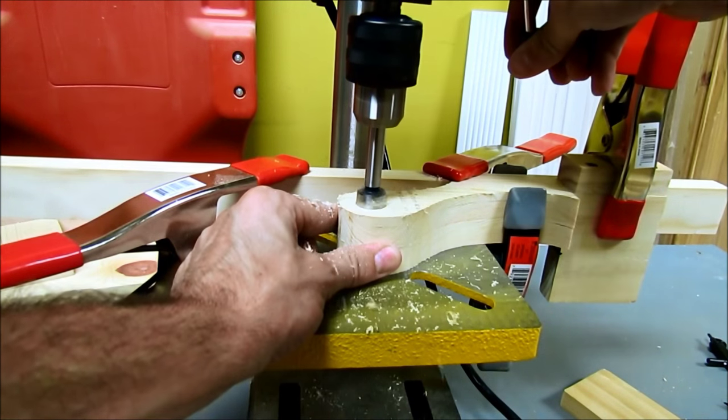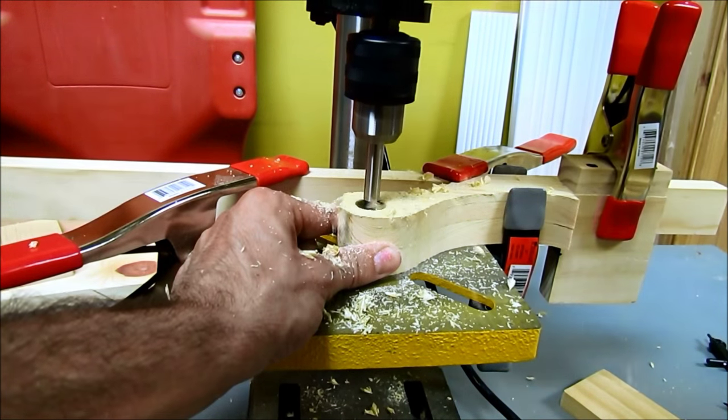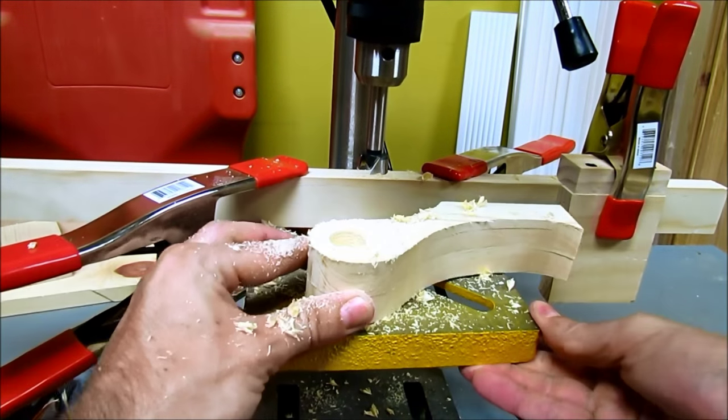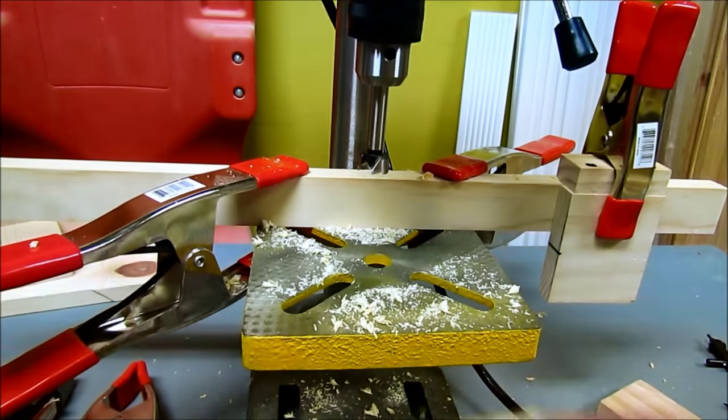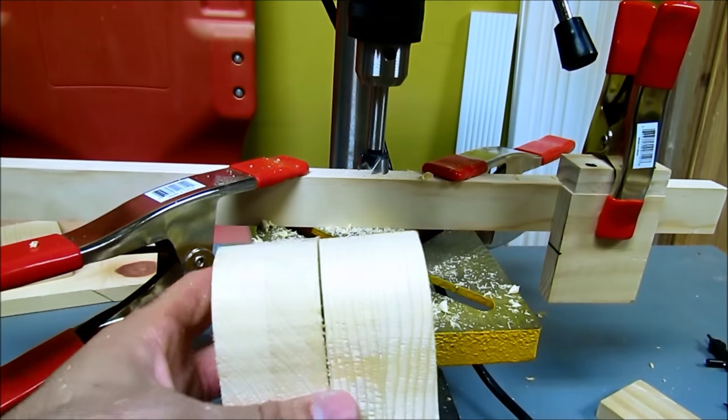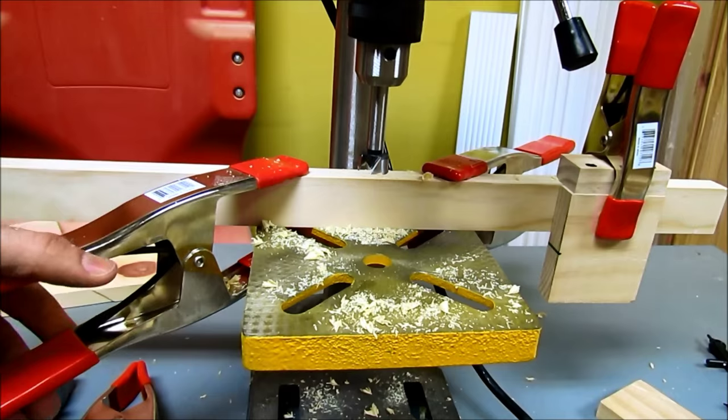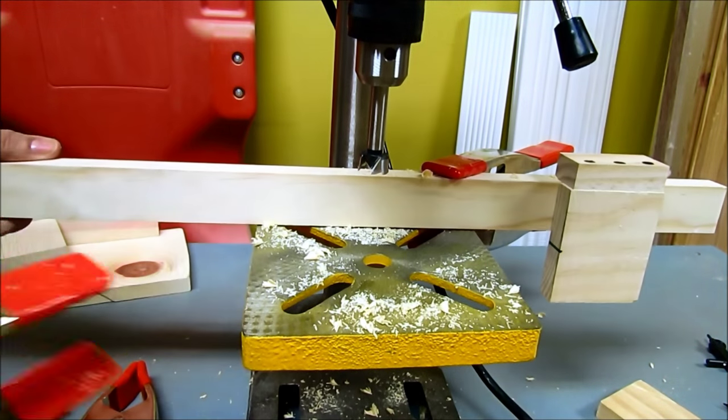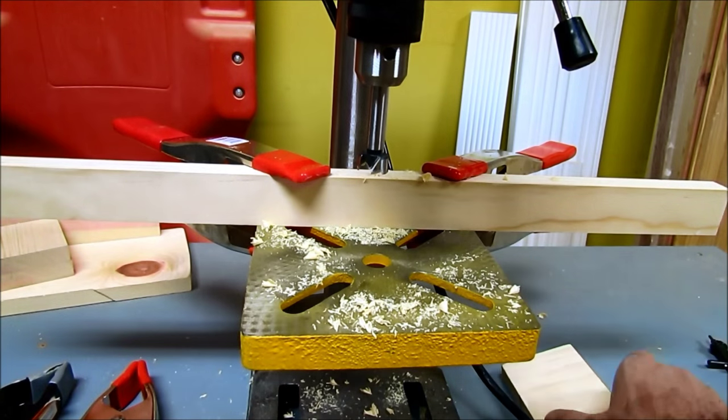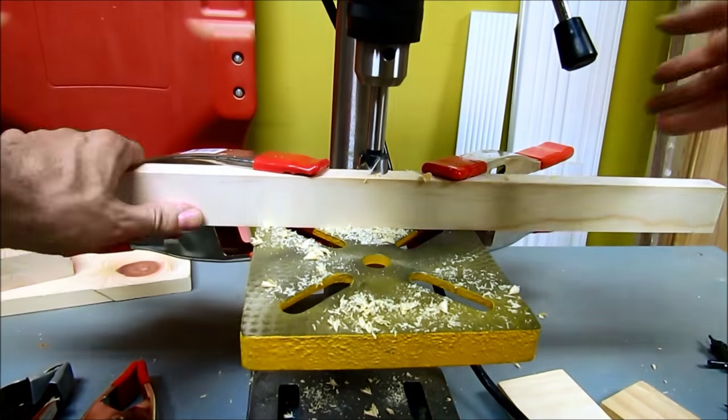One thing that I realized as I was doing this is that I have a left and a right piece. So I cannot use the same stop block to drill both of them, so I had to locate that stop block on the other side of the fence at the same distance.